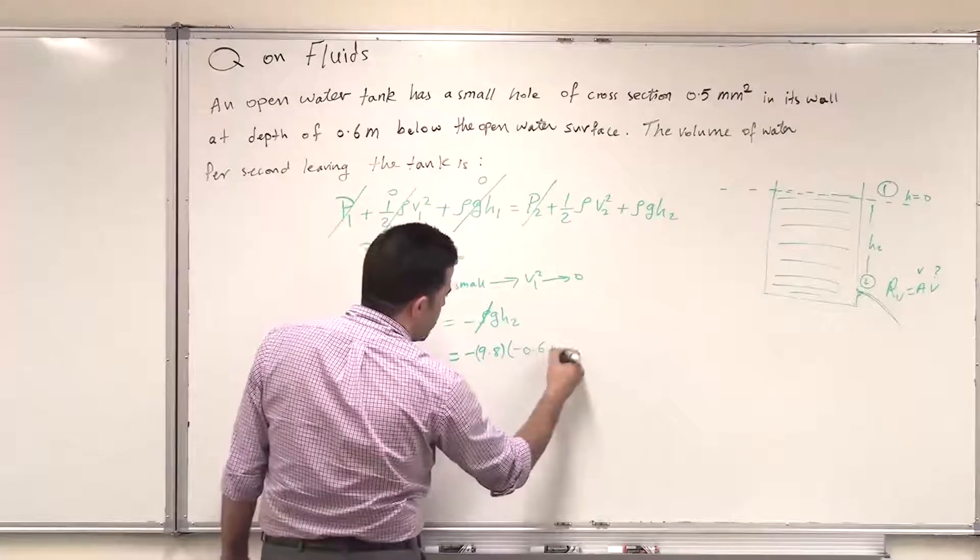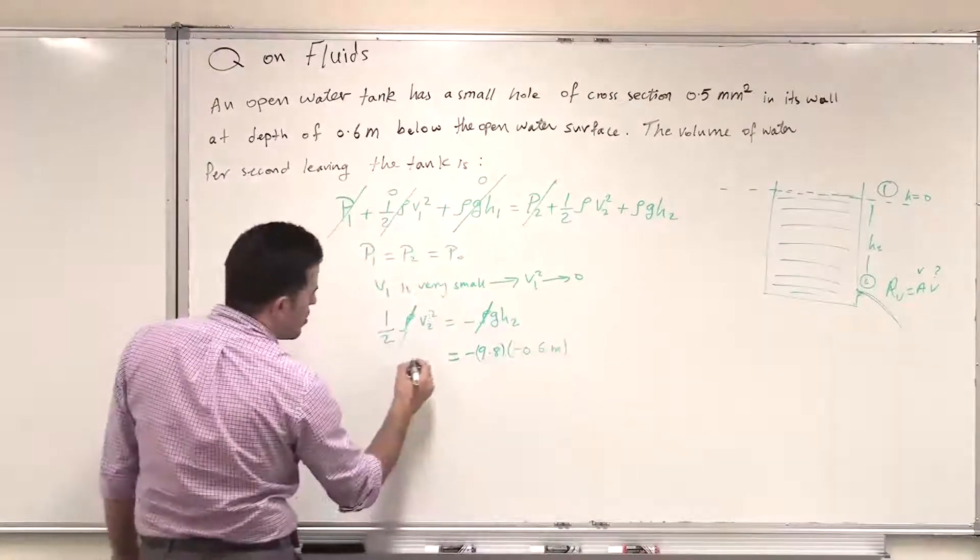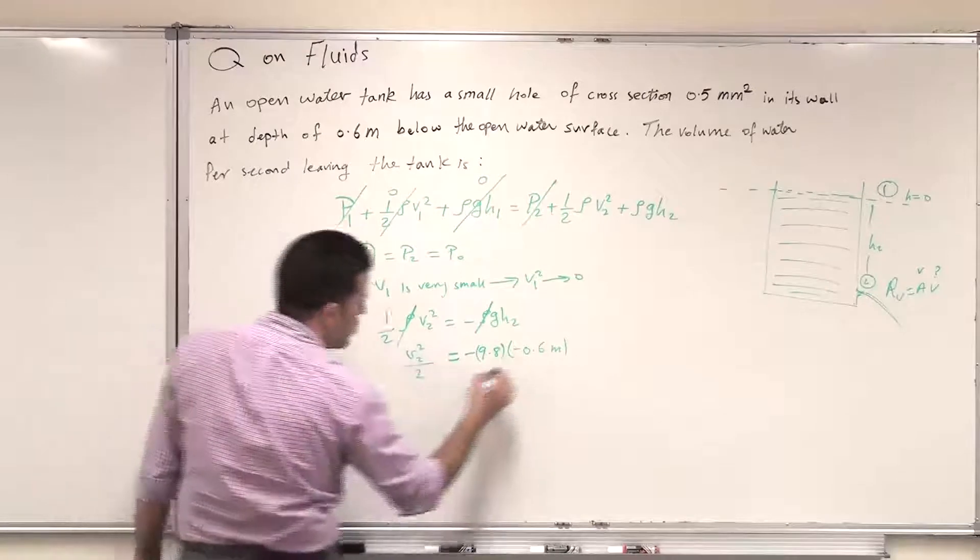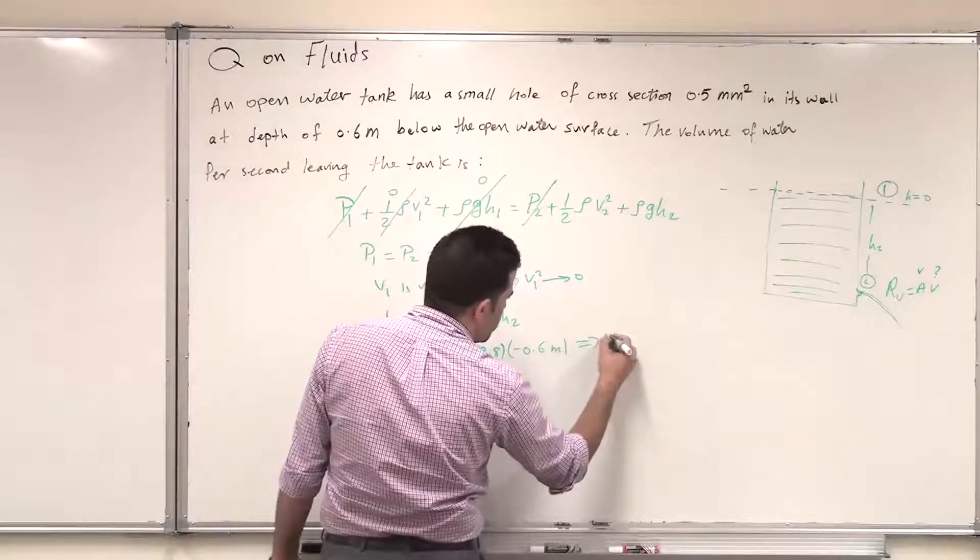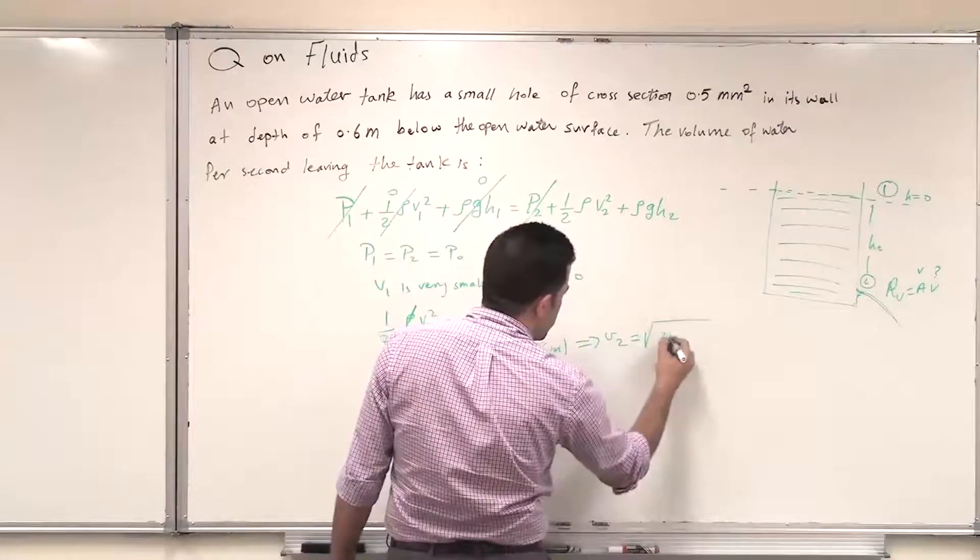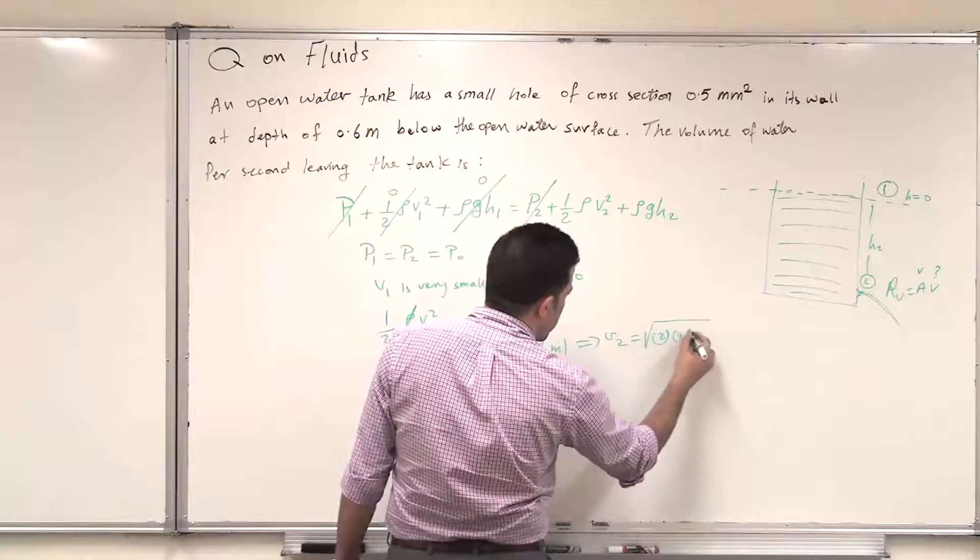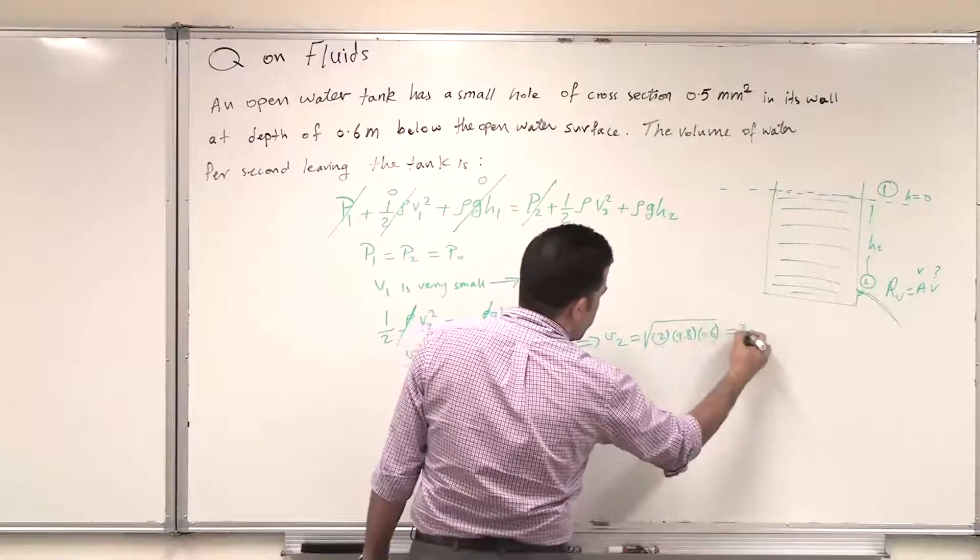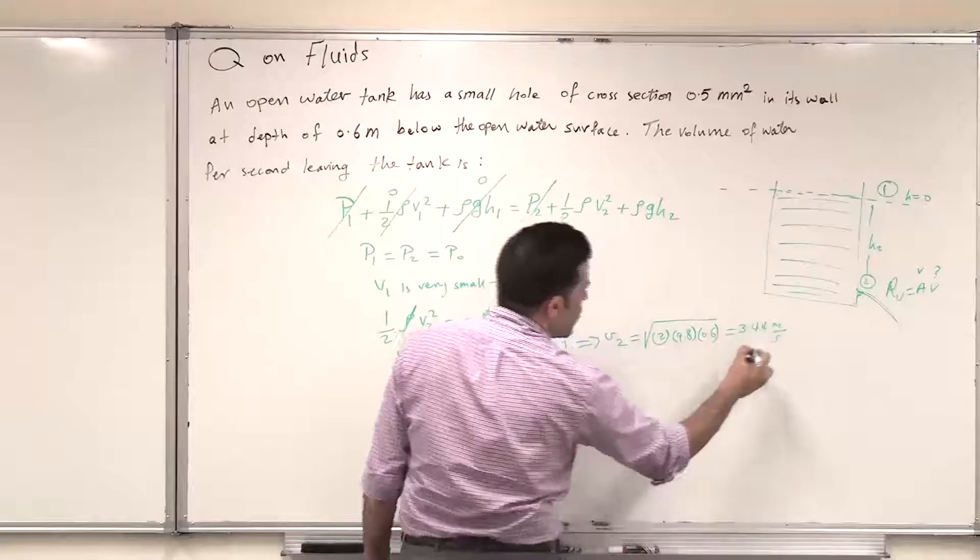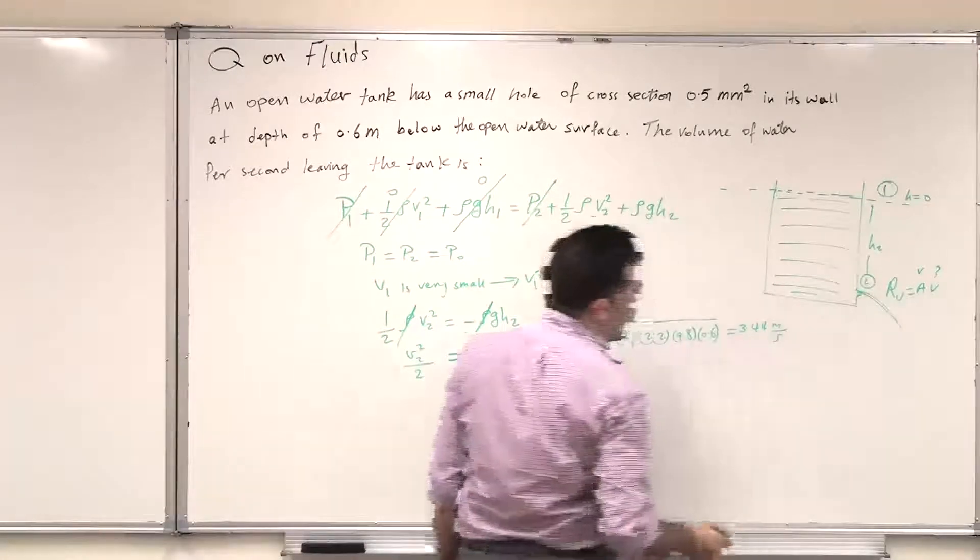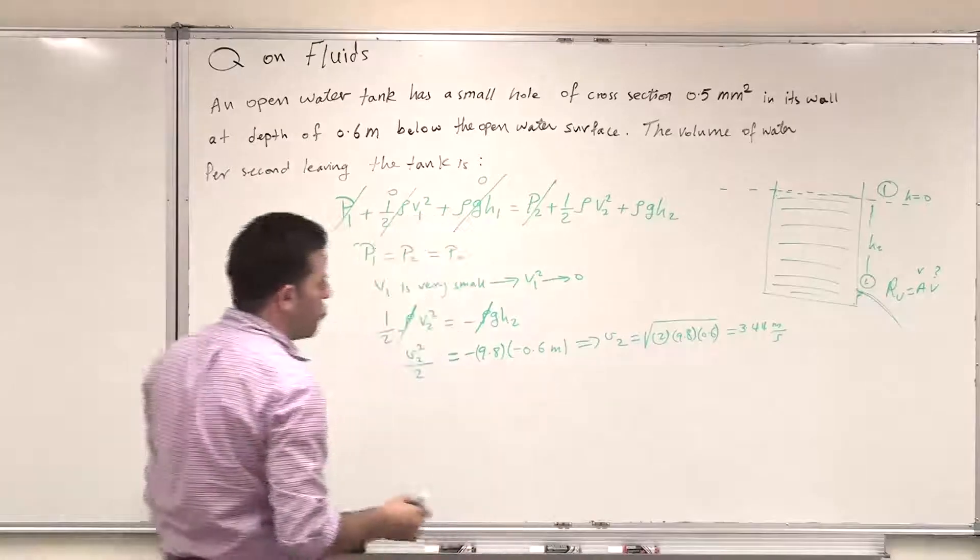And then we can substitute minus 9.8 multiplied by H2 but H2 is below the reference point so it is minus 0.6 meters. And this is V2 squared divided by 2 then V2 will be the square root of 2 times 9.8 multiplied by 0.6 which is 3.44 meters per second. So the velocity or the speed of water leaving this hole in the tank is 3.44 meters per second.